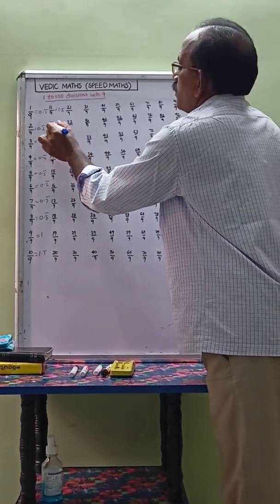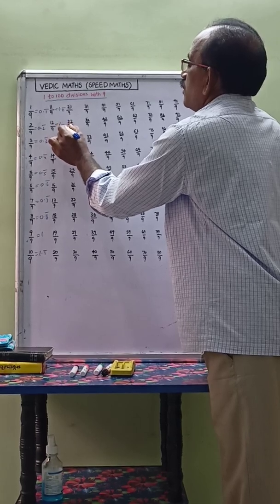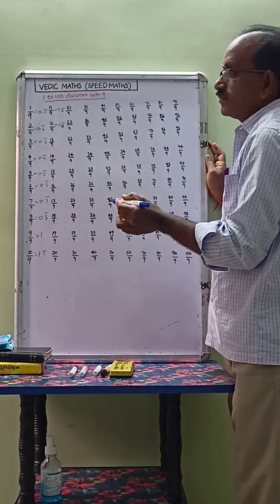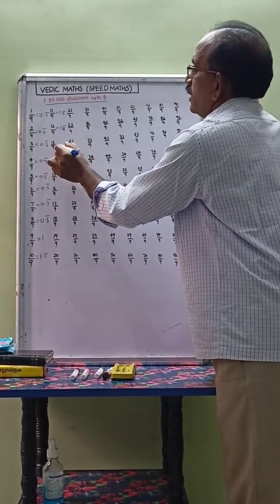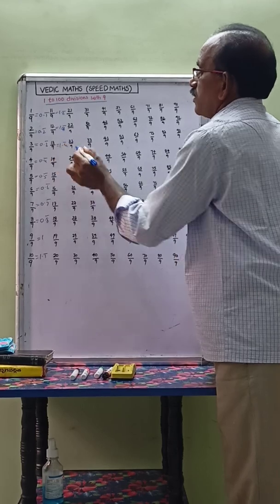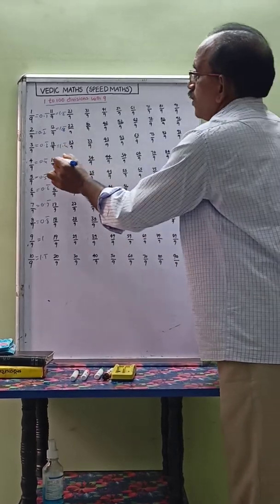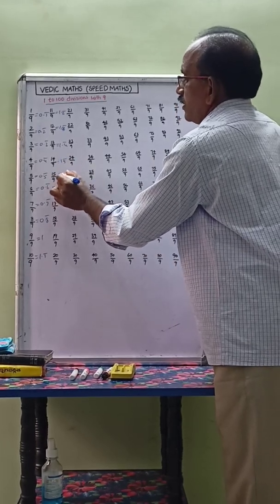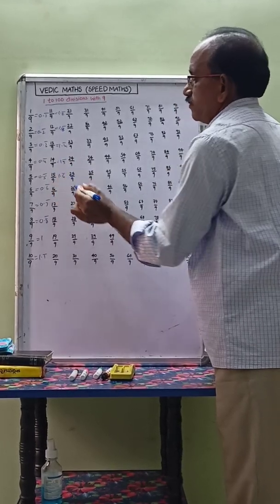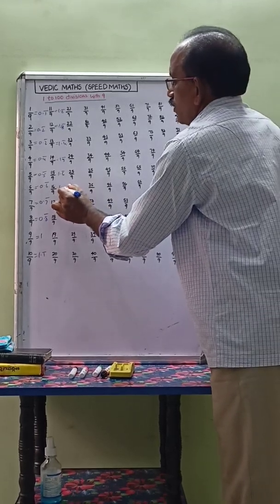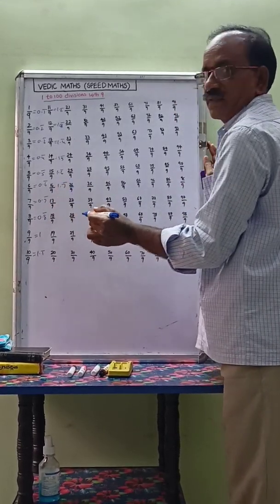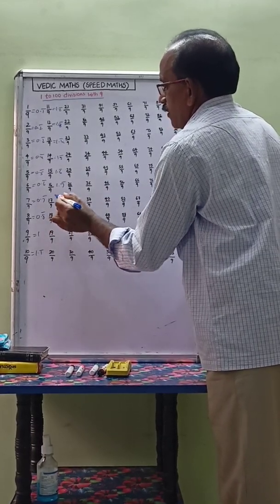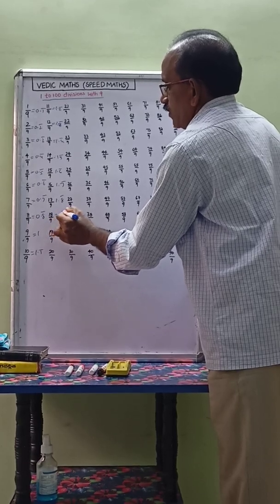12 by 9 equals 1.3 bar. 13 by 9 equals 1.4 bar. 14 by 9 equals 1.5 bar. 15 by 9 equals 1.6 bar. 16 by 9 equals 1.7 bar. 17 by 9 equals 1.8 bar. 18 by 9 equals 2.